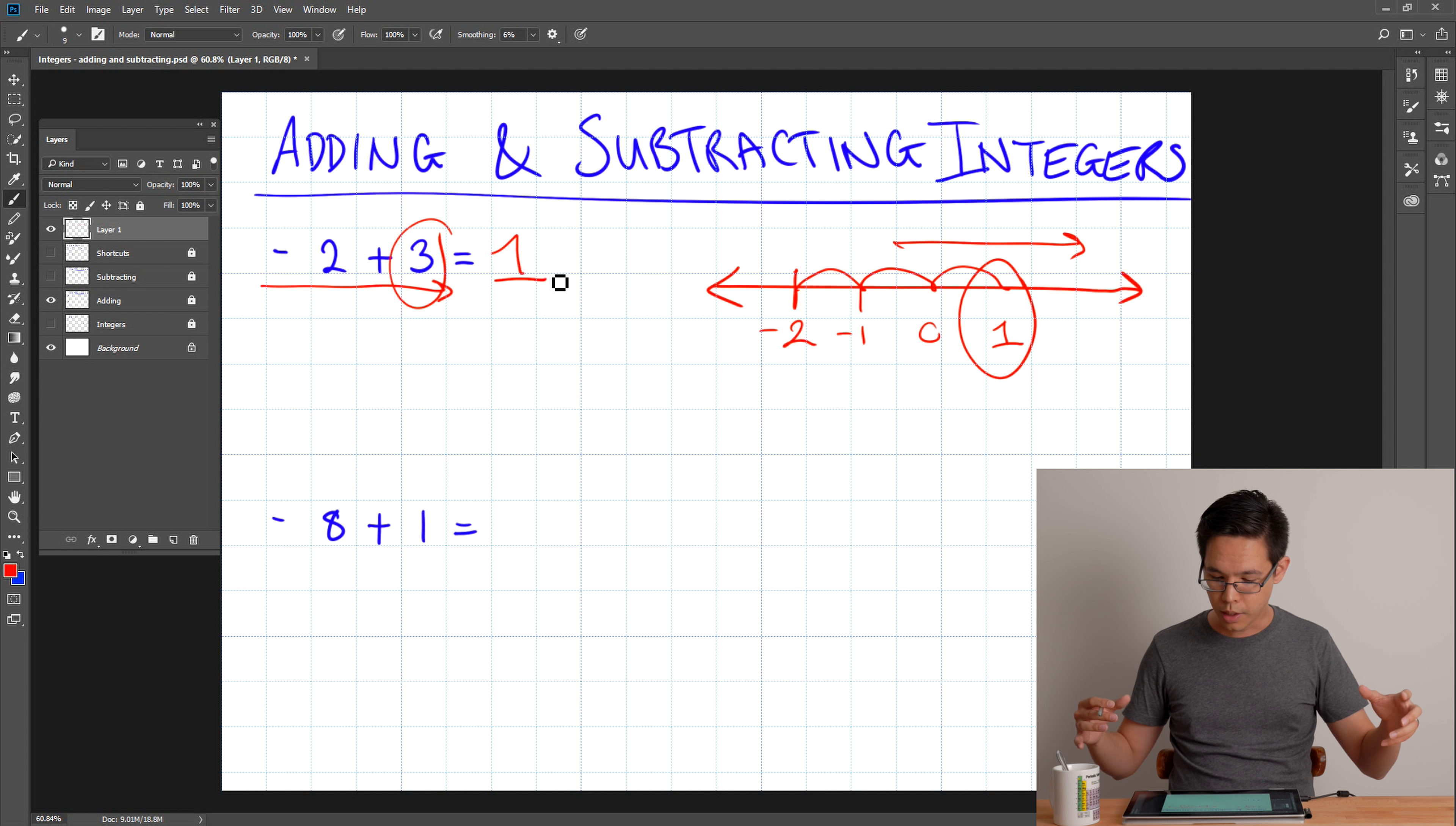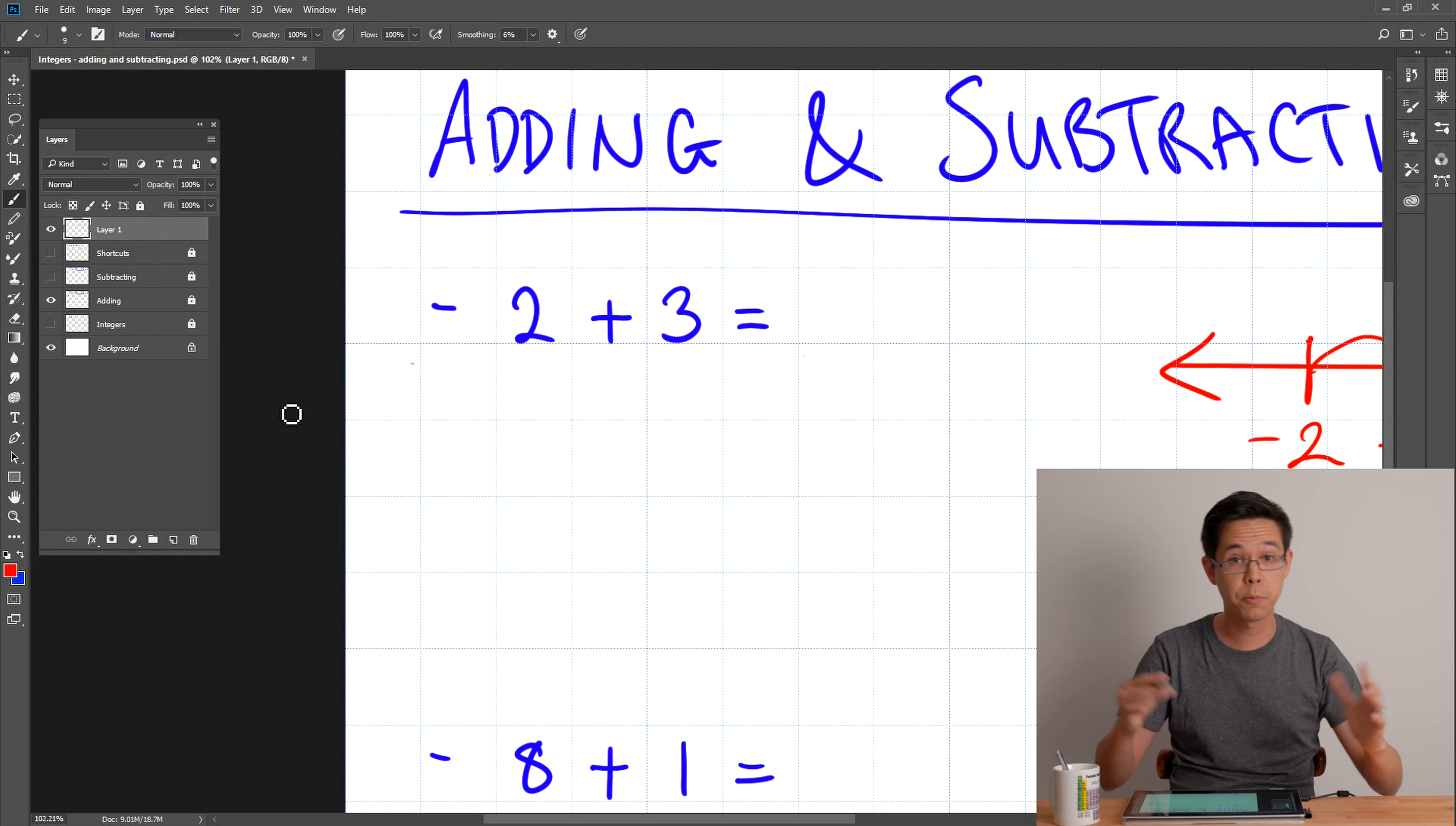Same thing here is like, if I have 200, minus 200 plus 35, I don't want to draw a number line that big. So what else can we do? So I want to show you my preferred method, which doesn't involve a number line. So it'll work with small numbers. It'll work with really large numbers as well.